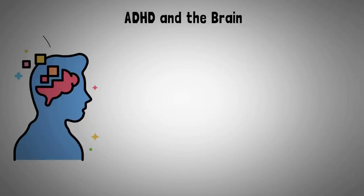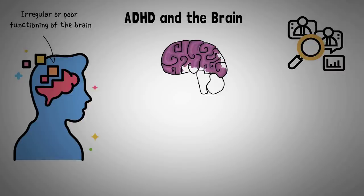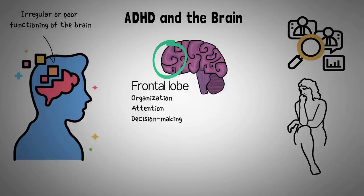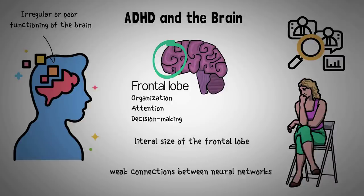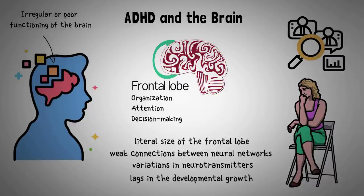Neurodevelopmental disorders like ADHD are associated with irregular or poor functioning in different areas of the brain. Although research still leaves us with many questions, we know that the frontal lobe of people with ADHD differs from neurotypical people — in children, this area is often smaller. The frontal lobe is associated with organization, attention, and decision making. Underdevelopment here may result in a wide variety of symptoms under the umbrella of ADHD, including differences in the literal size of the frontal lobe, weak connections between neural networks, variations in neurotransmitters, and lags in development as a person grows.